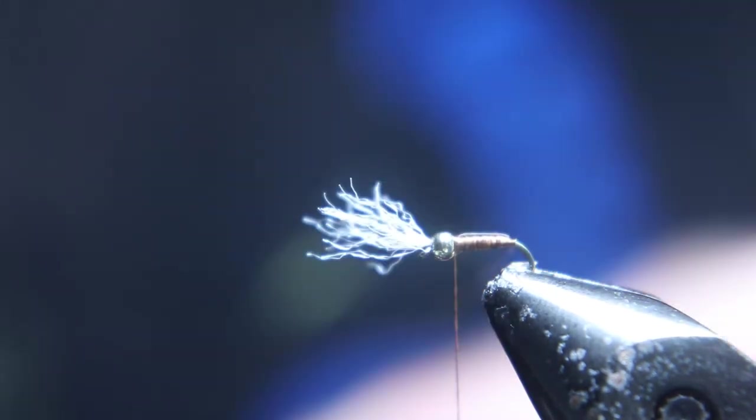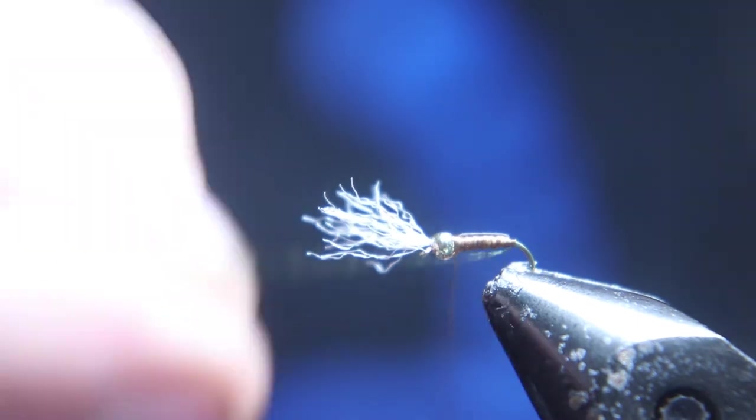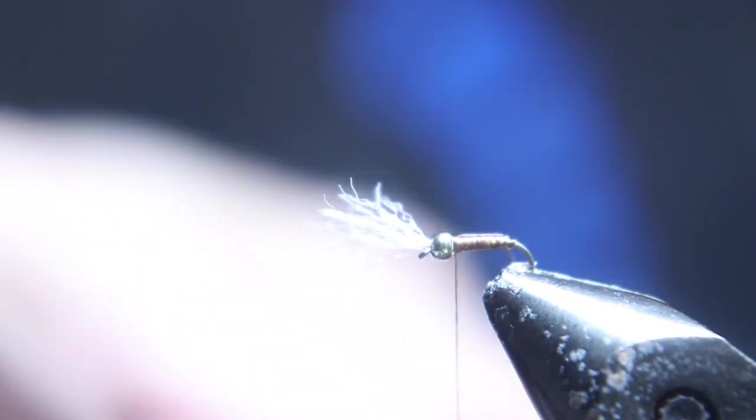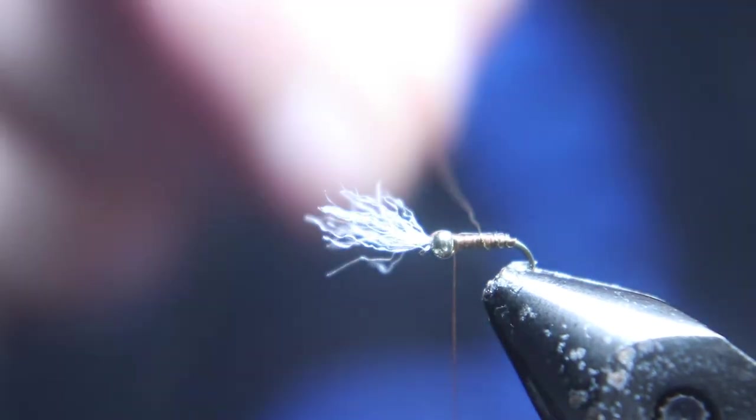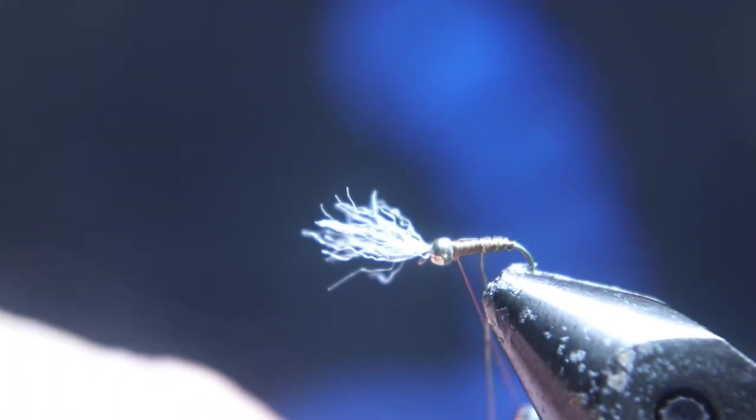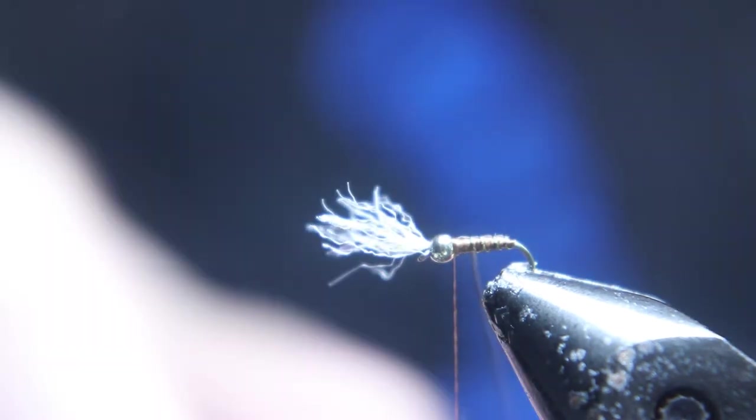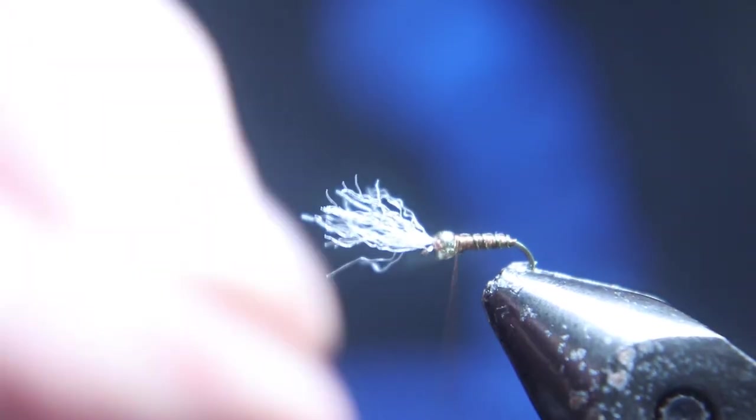Now we're going to take that wire and rib this fly. How perfect you get on the ribbing is up to you. I don't see any difference if you do a really good ribbing job and space it out evenly or if it looks rough. I haven't seen it make a difference in how many fish it catches, but rib this fly with that wire.